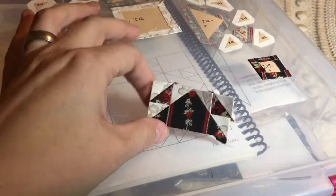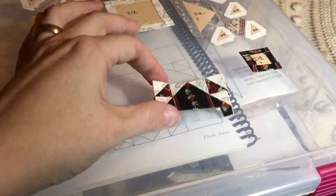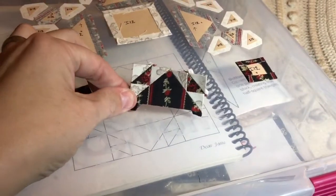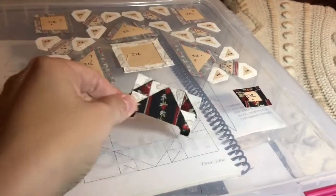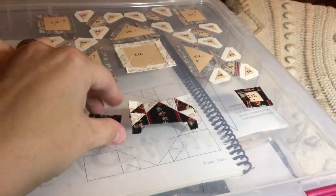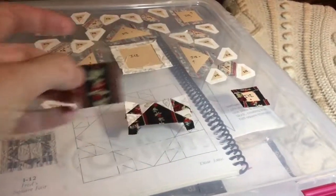So I've got both of my pieces on my flying geese unit, so this is what you should have. There's four of these, so I've got three more to make and I'm going to attach my squares to either side and that will comprise my whole bottom row here.